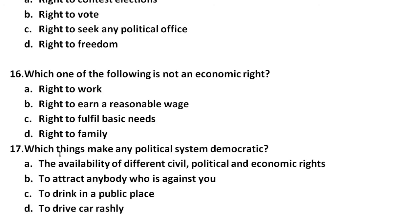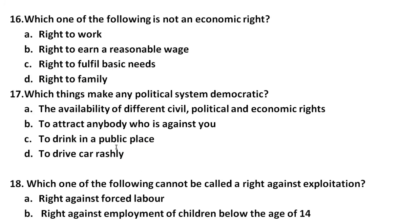Question number 17: Which of the following things makes a political system democratic? The options are: A) availability of different civil, political, and economic rights, B) the right to take action against anybody who is against you, C) the right to drink in a public place, D) the right to drive a car freely. Which one makes a political system democratic?